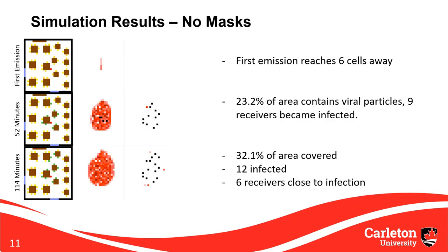Here are results from the first set of scenarios at three points in time, specifically the scenario where none of the individuals are wearing masks. At the top, the first viral spread reaches six cells above the index. The middle view at 52 minutes shows around 23% of the environment has a significant concentration of viral particles, with nine receivers having become infected. The bottom view at 114 minutes shows almost a third of the environment contains viral particles, with a total of 12 receivers infected and six more nearing the infection threshold.